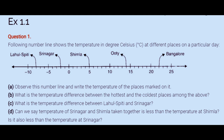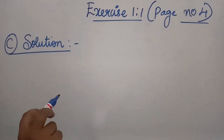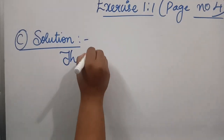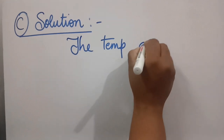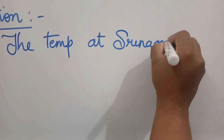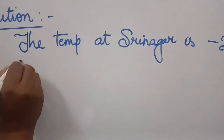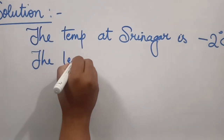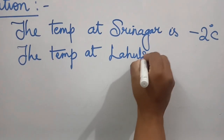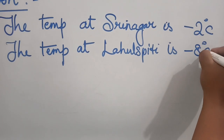Question C: what is the temperature difference between Laul Spiti and Srinagar? Let's solve it. The temperature at Srinagar is minus 2 degrees Celsius. The temperature at Laul Spiti is minus 8 degrees Celsius.